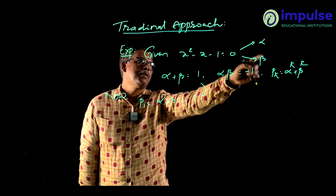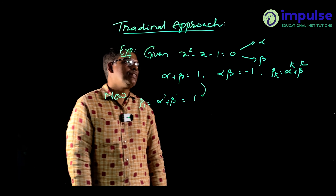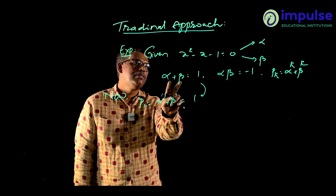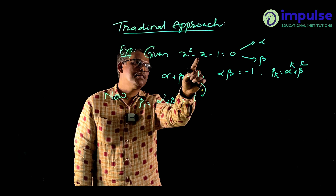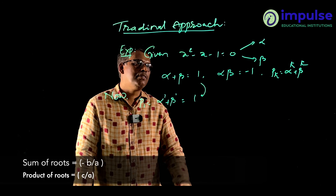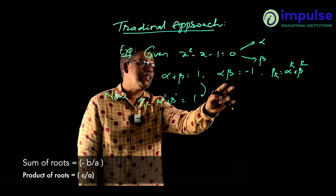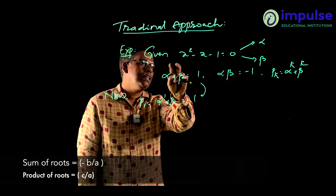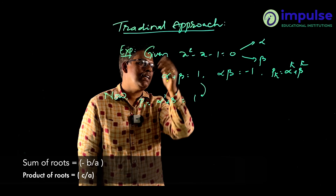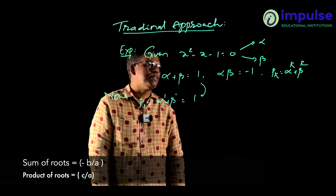Given alpha and beta are the roots of x² - x - 1 = 0, so the sum of the roots equals -b/a = 1, as you know from 10th standard. And the product of the roots equals c/a, where c is -1 and a = 1 here. So the product of the roots equals -1.